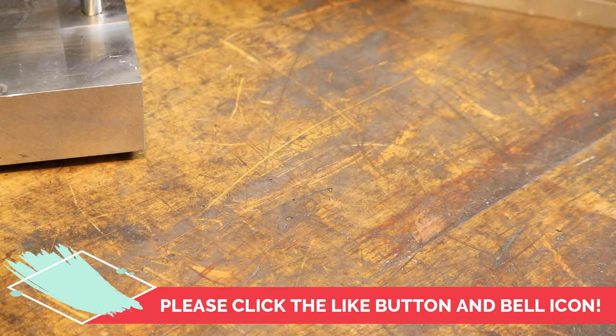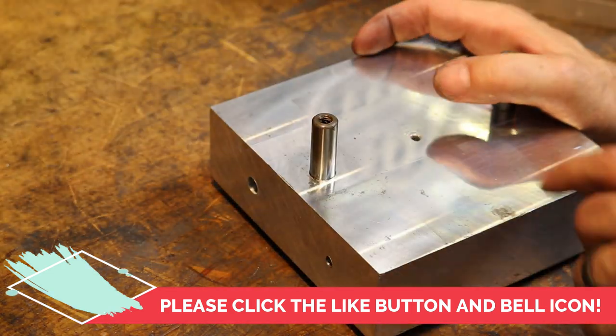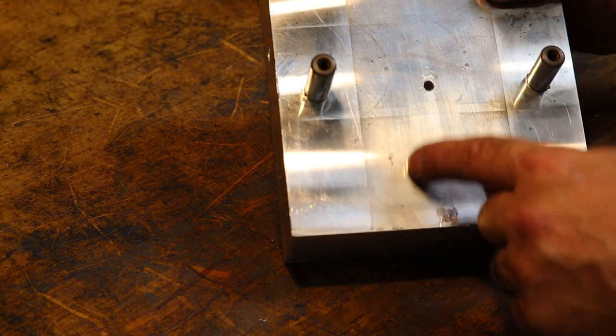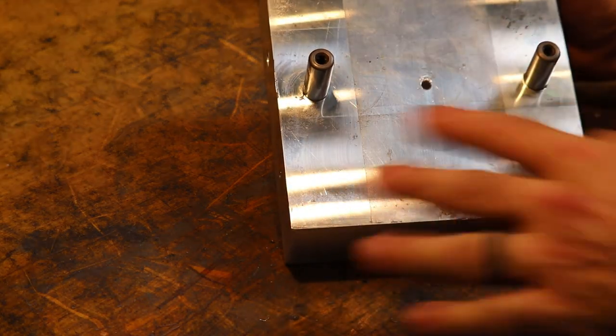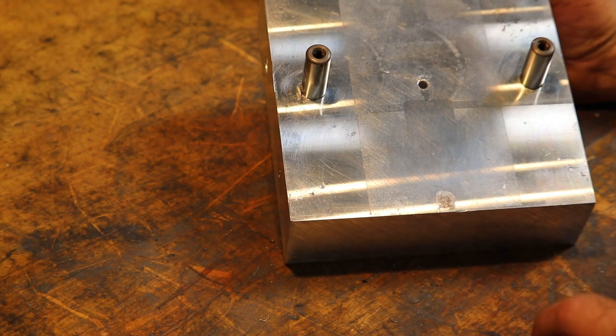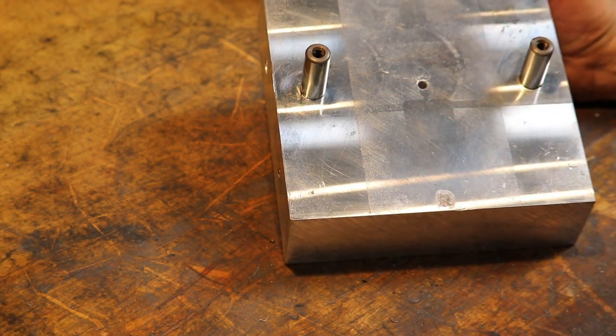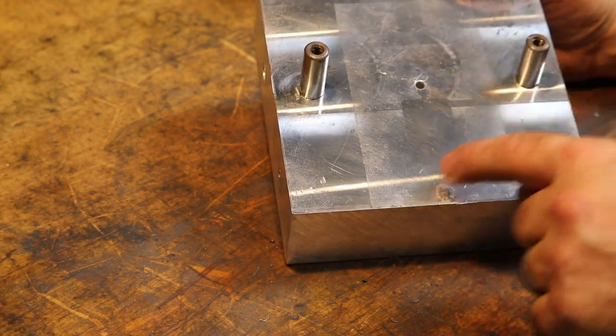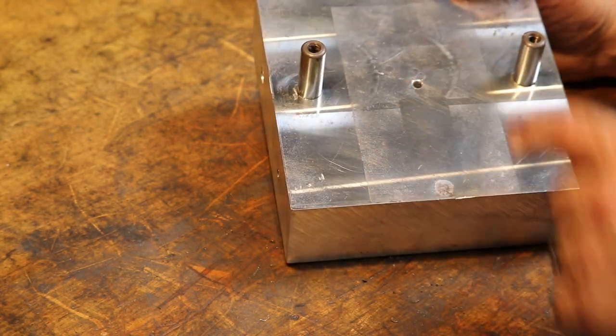Most of the work that we're going to do is going to be on this side and you may be able to see an impression of the mold cavity. I cleaned this surface off and so there's a few scratches because the rag had some aluminum dust in it. But that doesn't really matter because we're going to refinish this side.